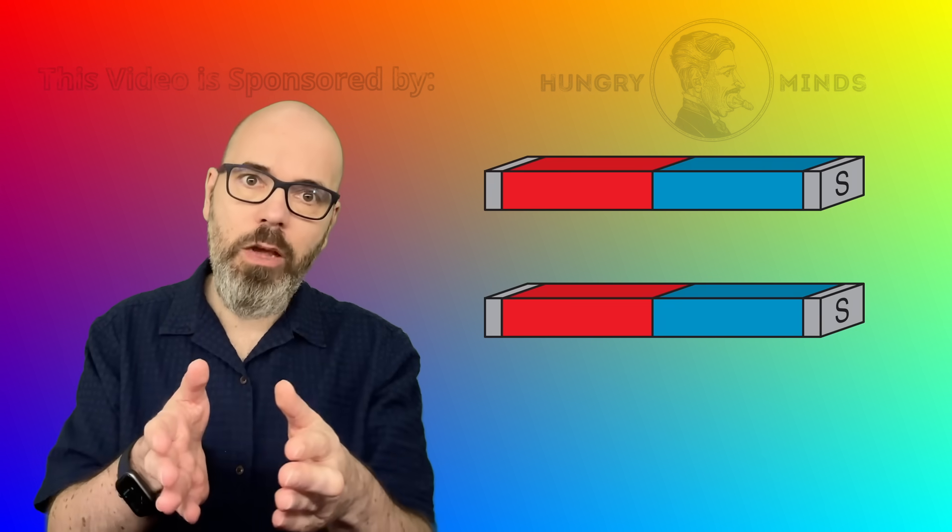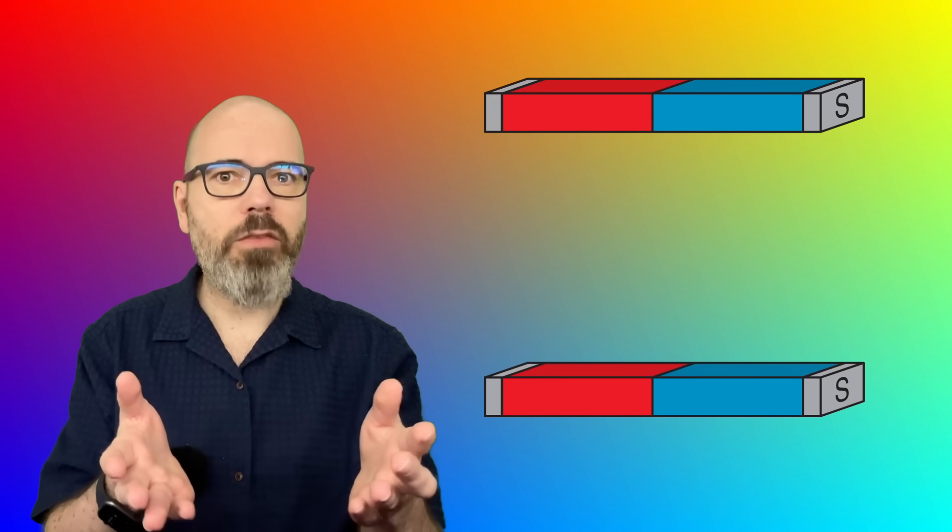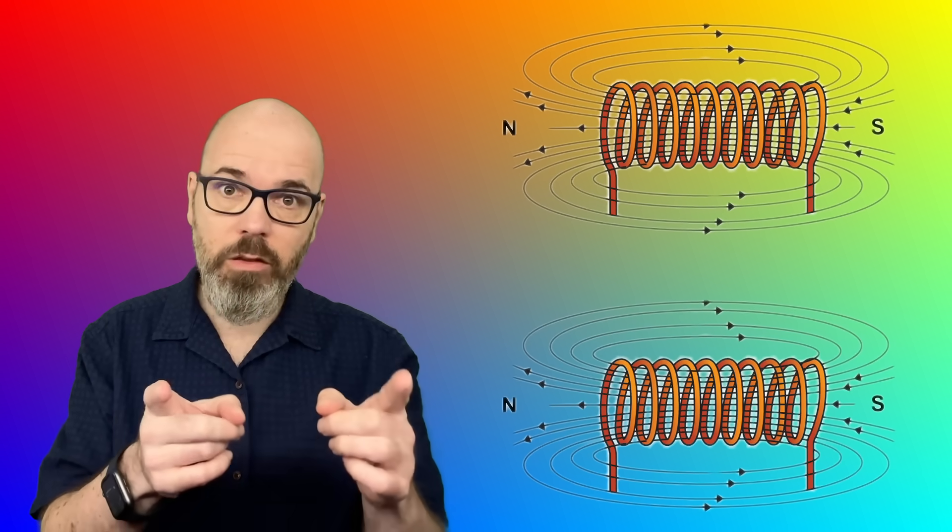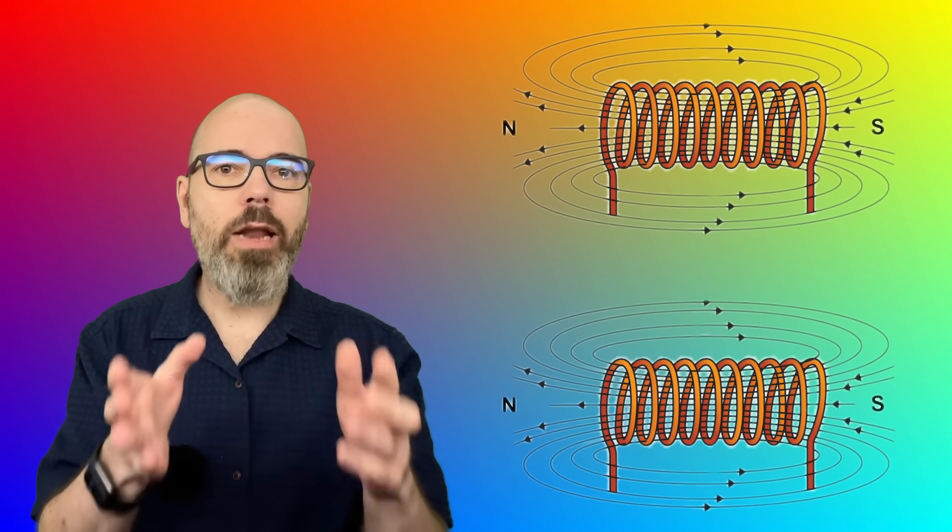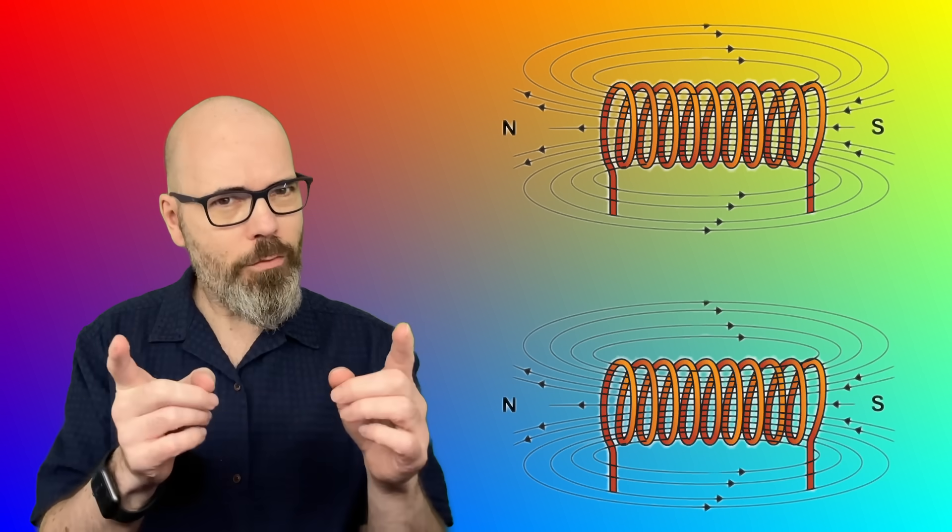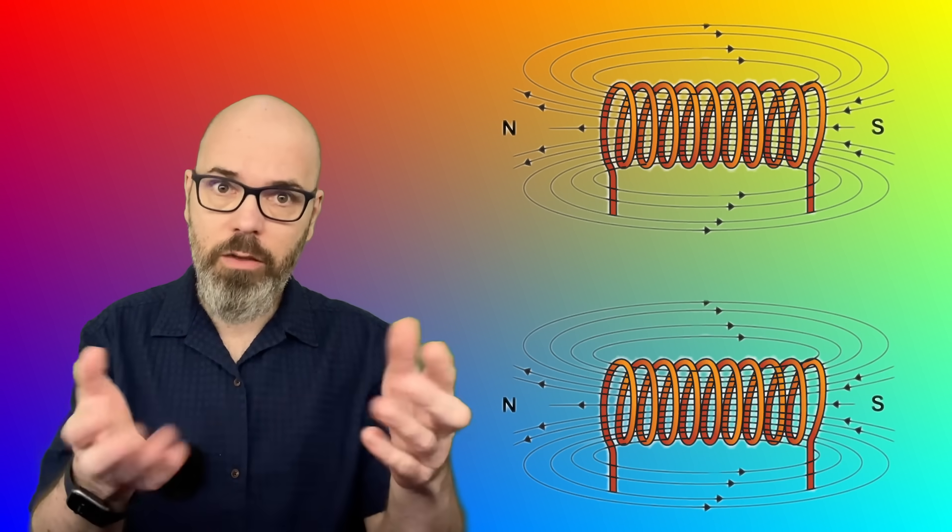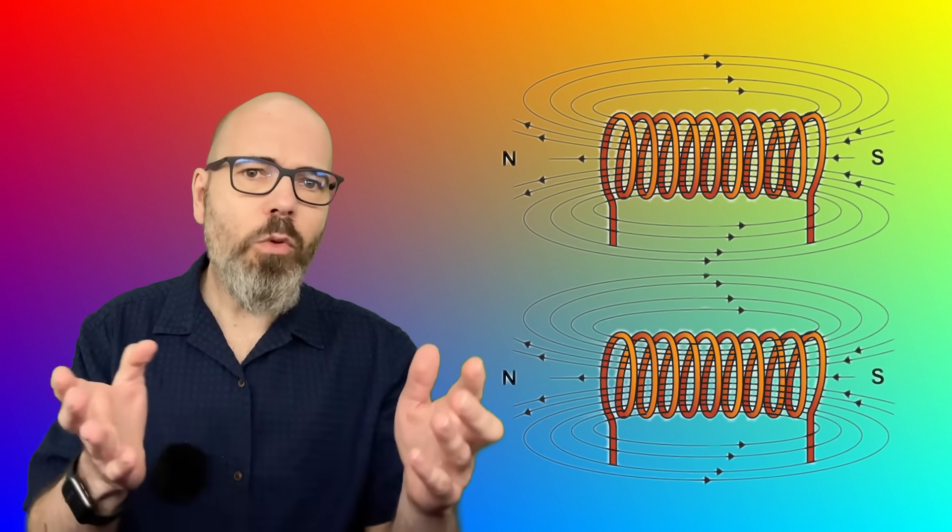Take two bar magnets, place them side by side with like poles facing, they repel. That's basic magnetism. Now, take two coils of wire, run the same current through both in the same direction. Each coil should act like a bar magnet. So, what do you think will happen? They should repel too, right? They don't. They attract. It's not what you'd expect.